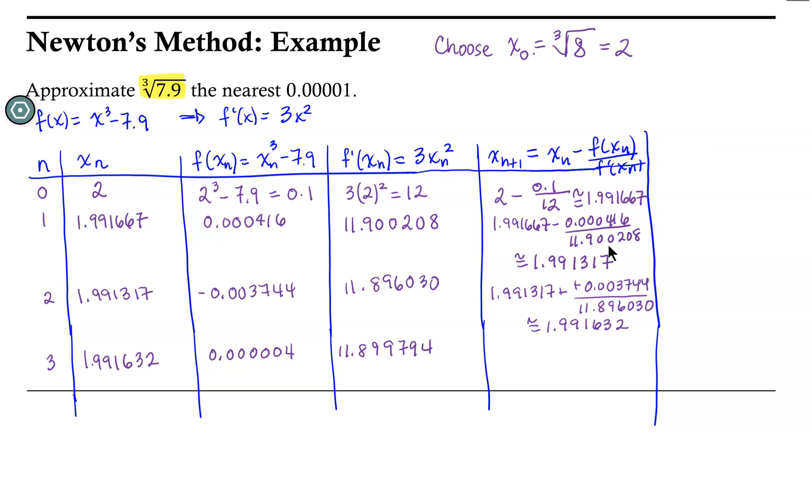So our next approximation or our next estimate of x will be 1.991632 minus 0.00004 divided by 11.891794. Something to notice here is that we are now subtracting a very small number, which is a good indication that we are pretty darn close to that value of x. And so this is approximately equal to 1.991632.